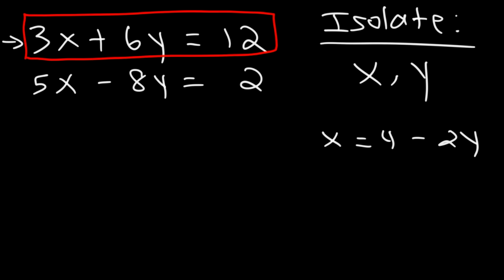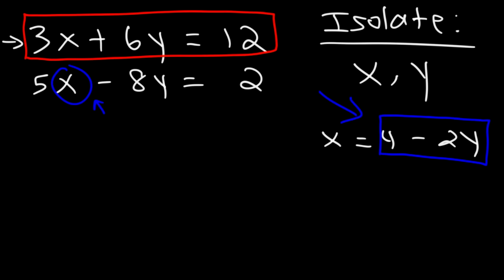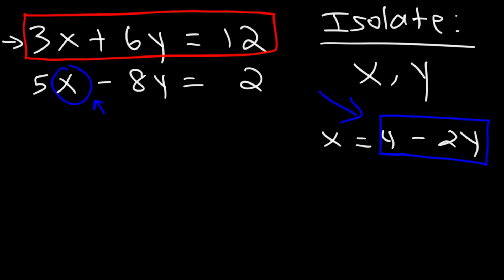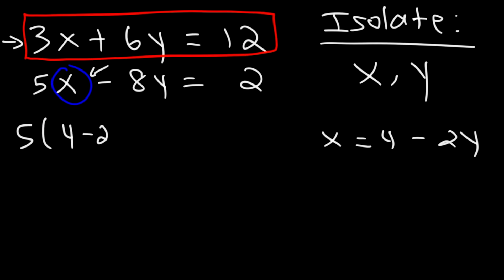Once we isolate a variable — in this case x — we need to replace x in the second equation, not the first. We need to replace the x variable with 4 minus 2y. We got this expression from the first equation, and now we plug it into the second equation. So let's substitute x with 4 minus 2y.